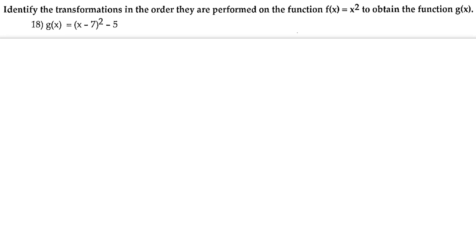Number 18. We're going to identify the transformations in the order that they're performed on the function f of x equals x squared to obtain the function g of x.